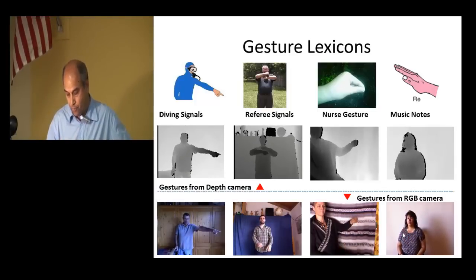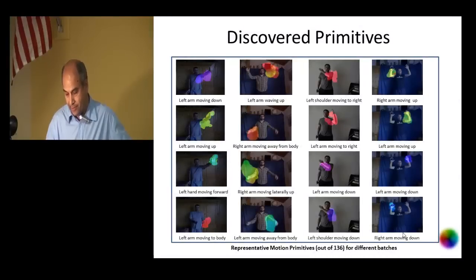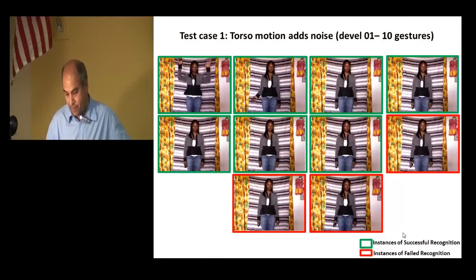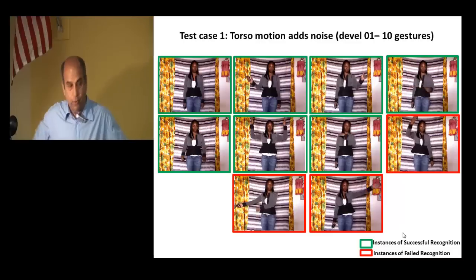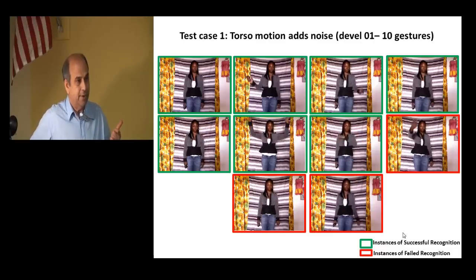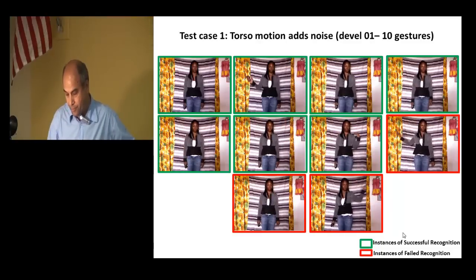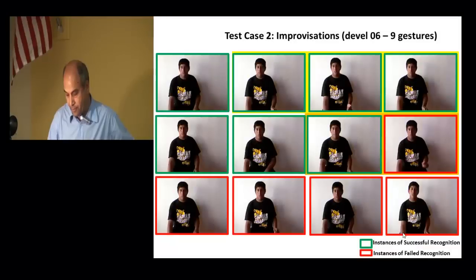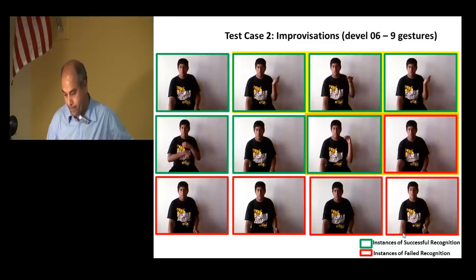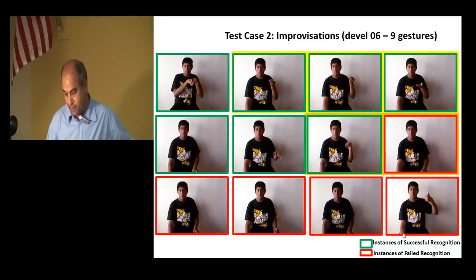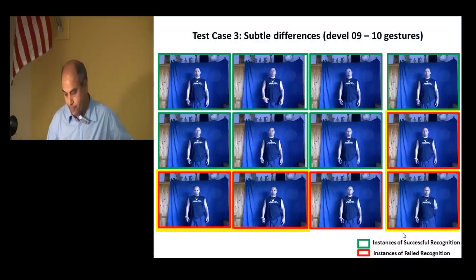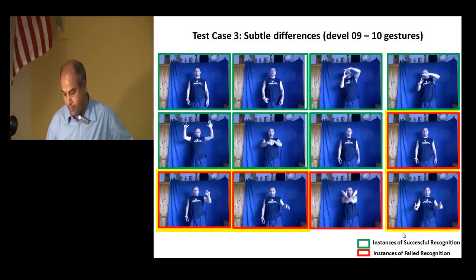There are different kinds of gestures: driving signals, referee signals, music notes and so on. You want to write a computer program to recognize those. The challenge is that we have only one example for each gesture — that's called one-shot learning.